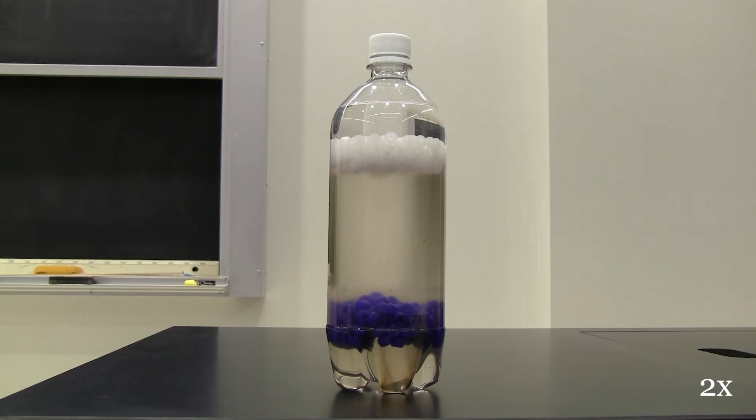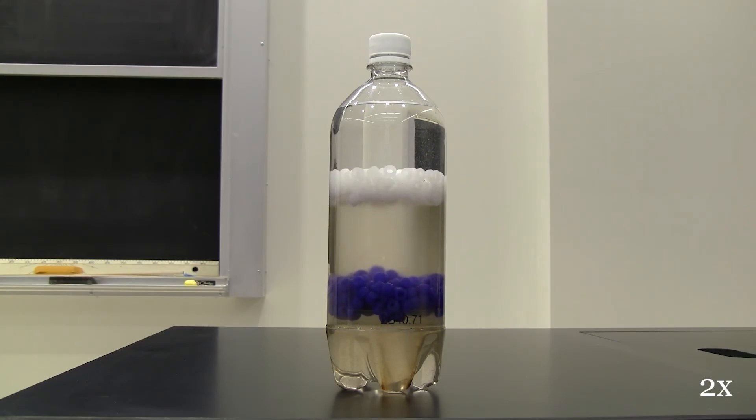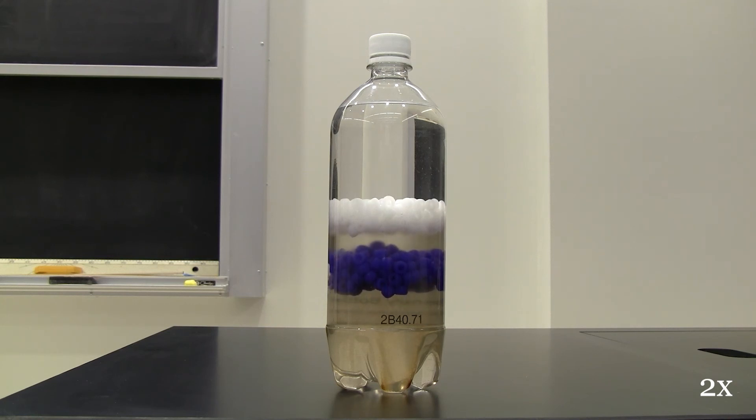This occurs because there are really four substances involved here: two types of beads, rubbing alcohol, and a salt water solution. After shaking, the combined fluid mixture has a density in between the densities of the two beads. However, over time, the two fluids start to separate, and our final layering is entirely due to density.